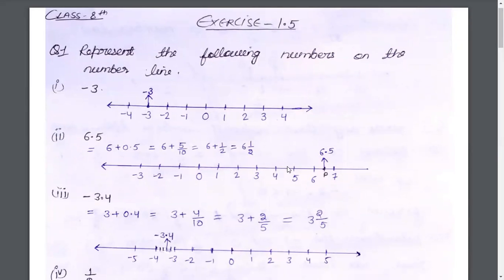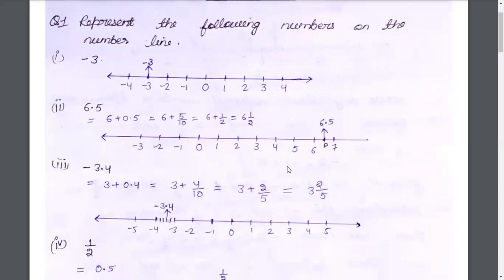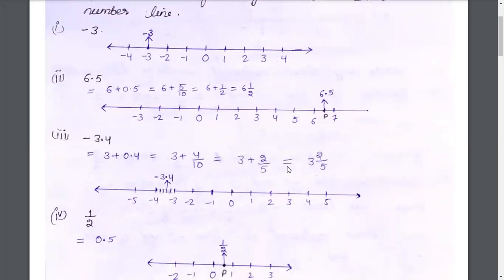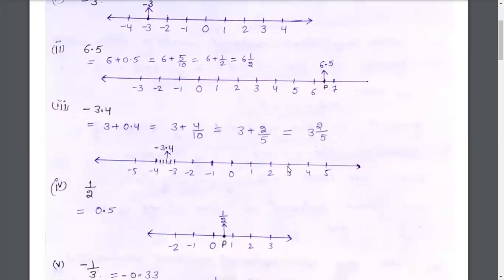Question 1 is given: represent the following numbers on the number line. For the number line, we need to represent the number and show the number. For plus and minus, we will write both numbers. If we have minus 3, then we will draw minus 3. There is 6.5.